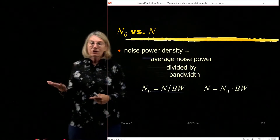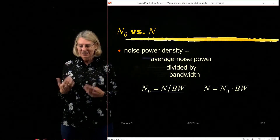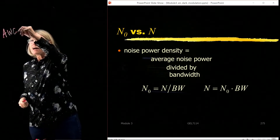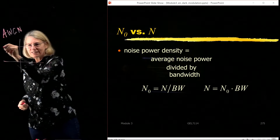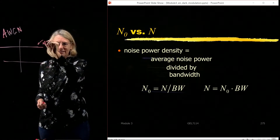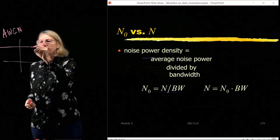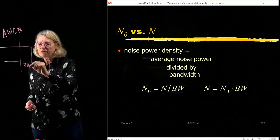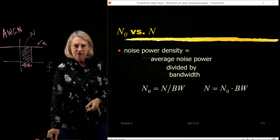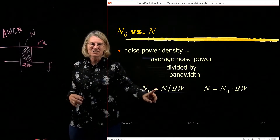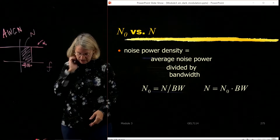Now let's look at N0 versus N. N0 is the power spectral density. If I say that I have additive white Gaussian noise, I know that in the frequency domain it is flat — that gives me N0. N is the noise in a given bandwidth. So if I take a certain bandwidth, that area under the flat spectrum would be the noise. N0 is noise per unit bandwidth, whereas N is just the noise in a given bandwidth.